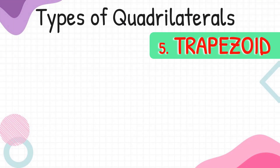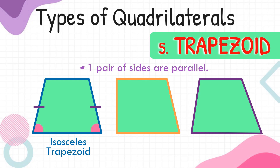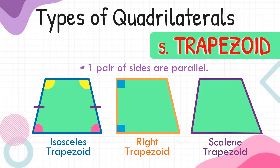The last type of quadrilateral is trapezoid, where there is only one pair of parallel sides. There are three kinds of trapezoids. First is the isosceles trapezoid, where the non-parallel sides have the same length and the base angles are of the same measurements. Second is the right trapezoid, where there is a pair of right angles. Lastly is the scalene trapezoid, which has no sides of equal length.